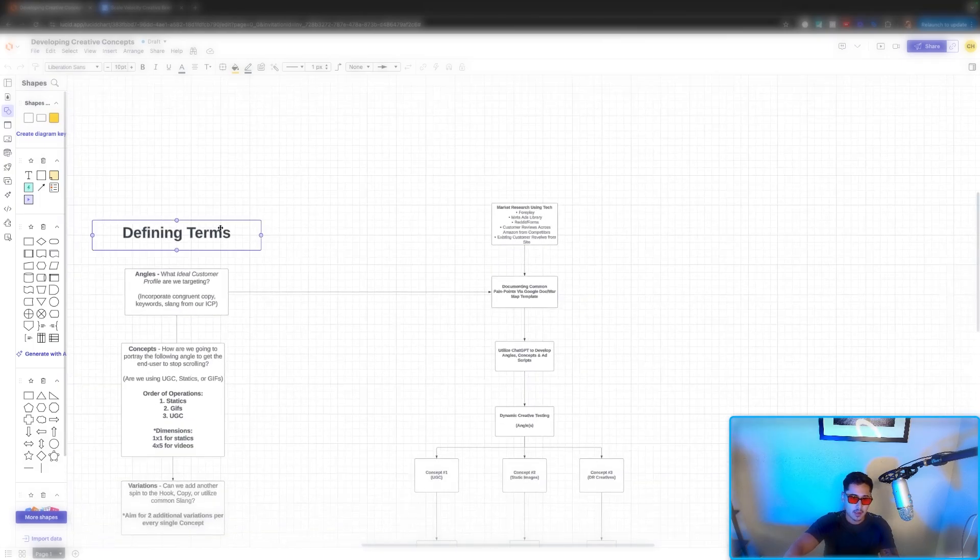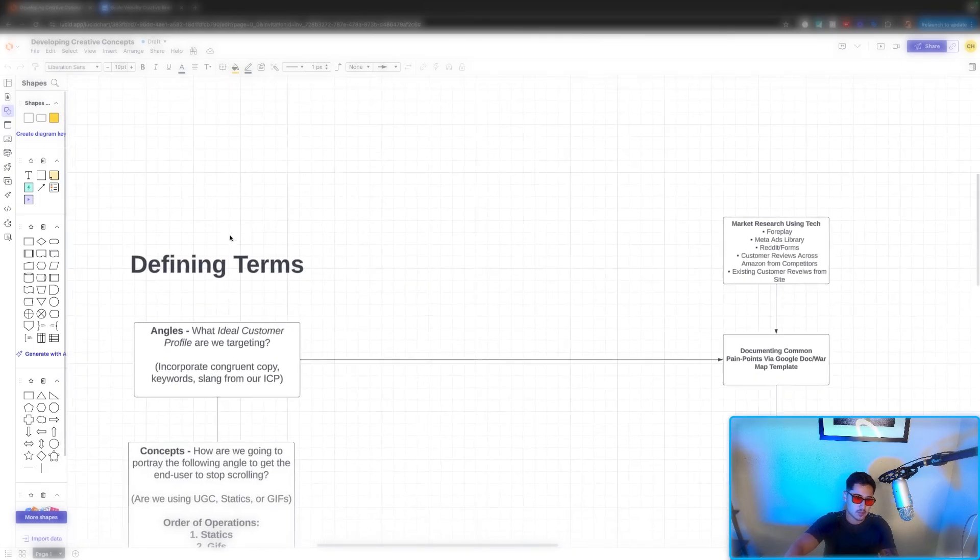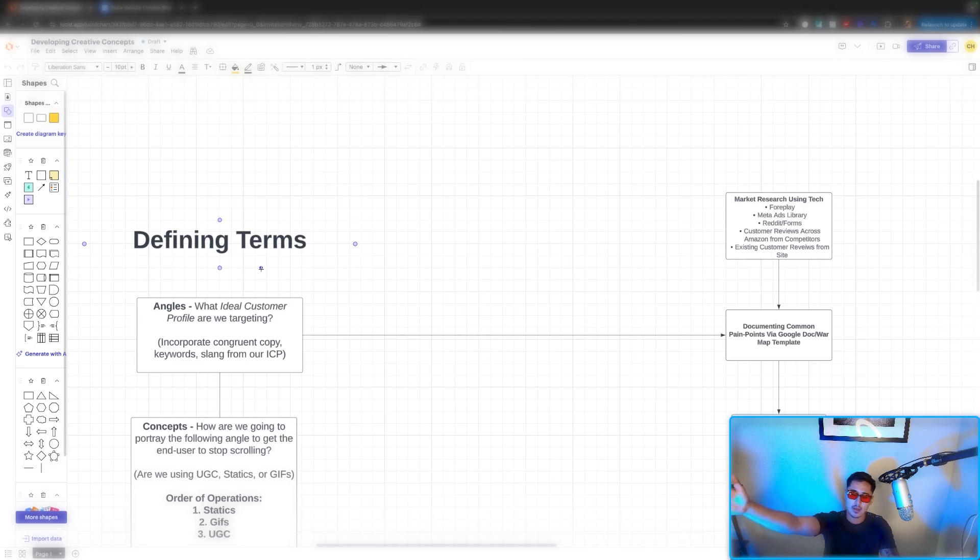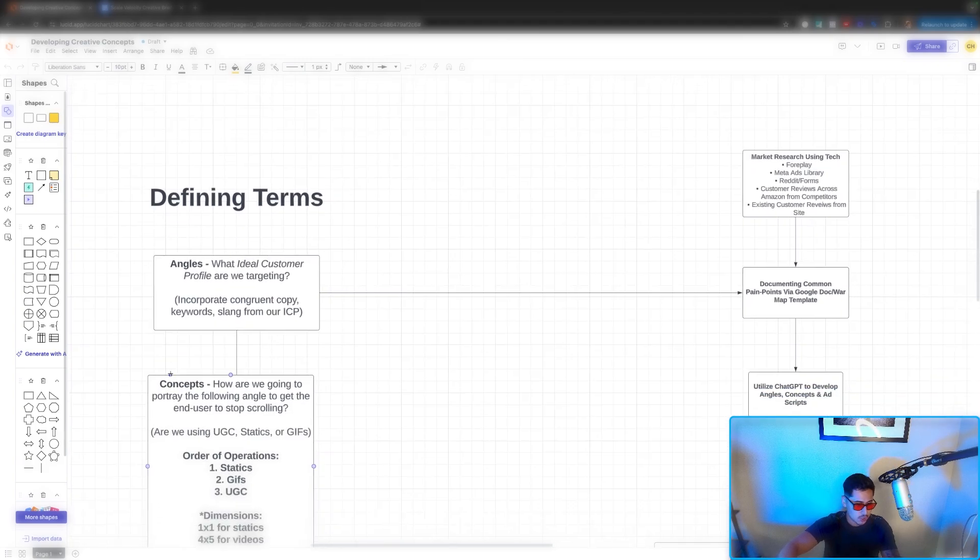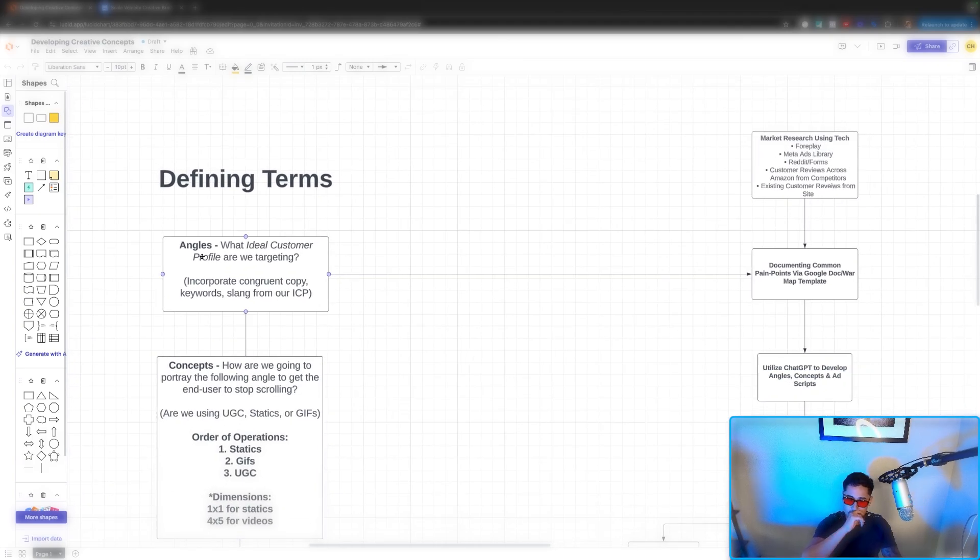And then from there, we're defining terms in terms of angles. Who are we targeting with this concept? How can we reach our ideal customer profile? Are we hitting men from ages 25 to 45? Are we hitting women ages 35 to 45 that are married? Relationships, whatever.